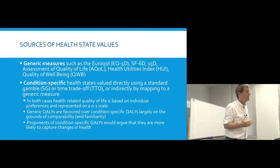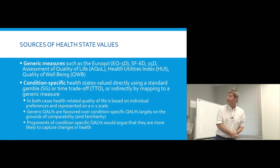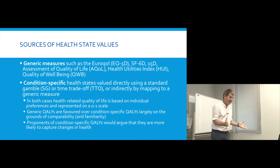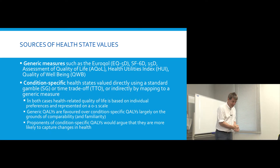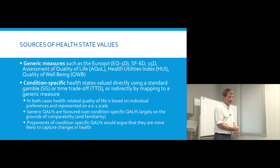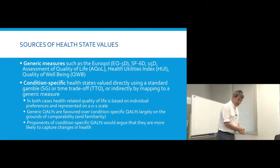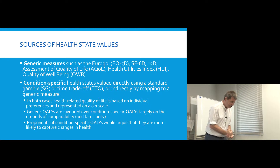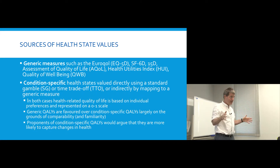The SF6D utilizes a subset of the SF36 data and weights the different items based on people's preferences. You've probably never come across the 15D — 15 dimensions — a somewhat unwieldy measure developed in Finland and largely used there. Another measure is the AQUAL, or Assessment of Quality of Life, an Australian measure. There's also the Health Utilities Index, abbreviated HUI, a Canadian measure. And not to be left out, there's a US measure: the Quality of Well-Being Scale, QWB. That is essentially the full population of generic preference-based measures for adults.